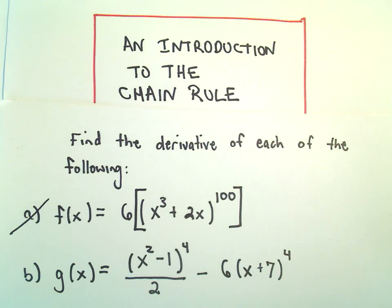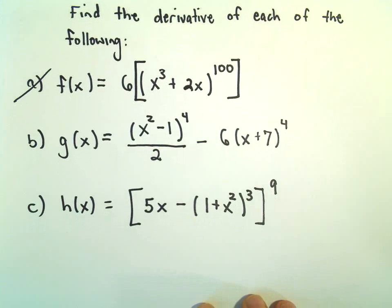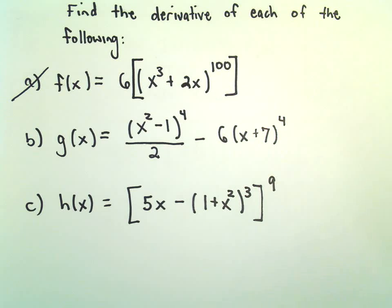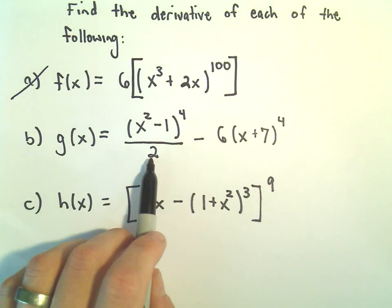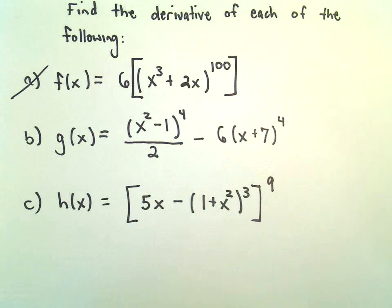In this video we'll do another example of finding a derivative by using the chain rule. Here we're going to find the derivative of x squared minus 1 to the 4th over 2 minus 6 times x plus 7 to the 4th.